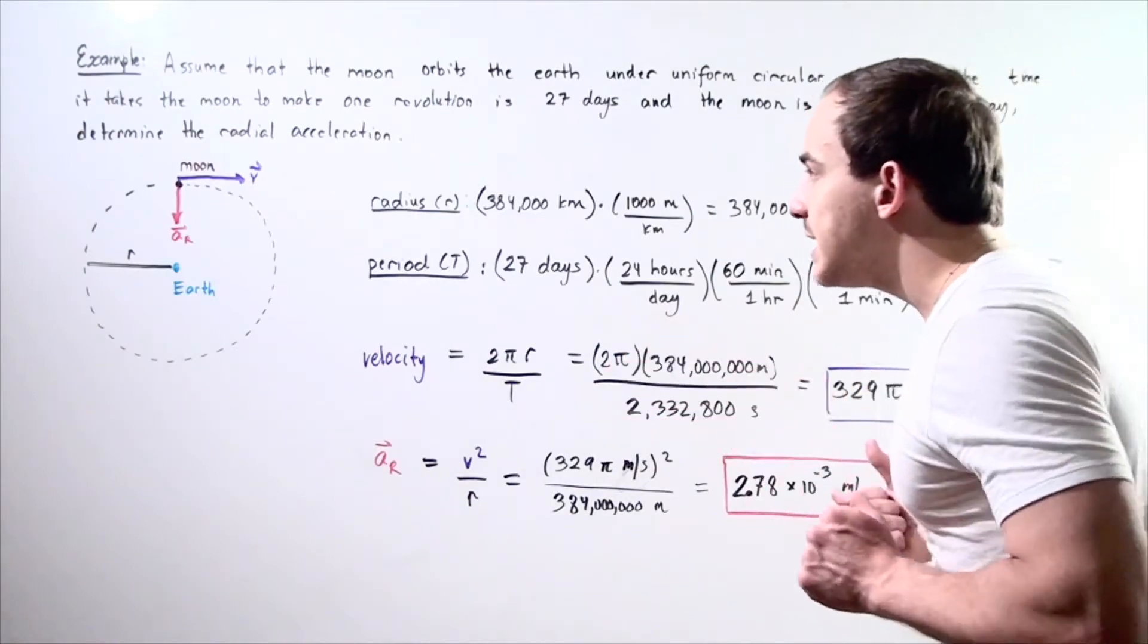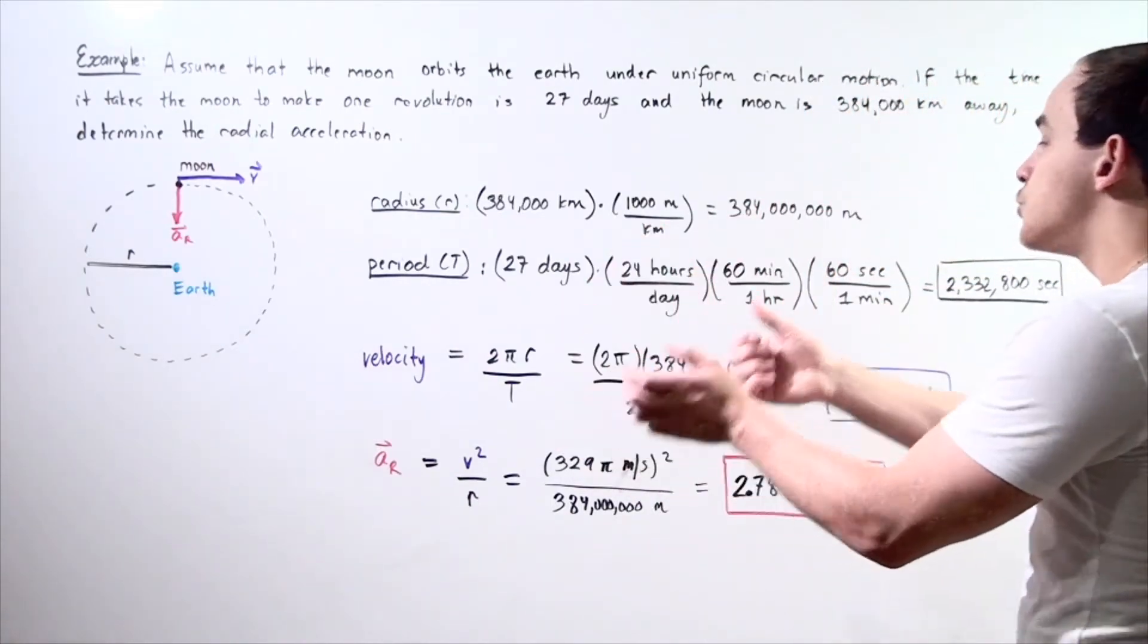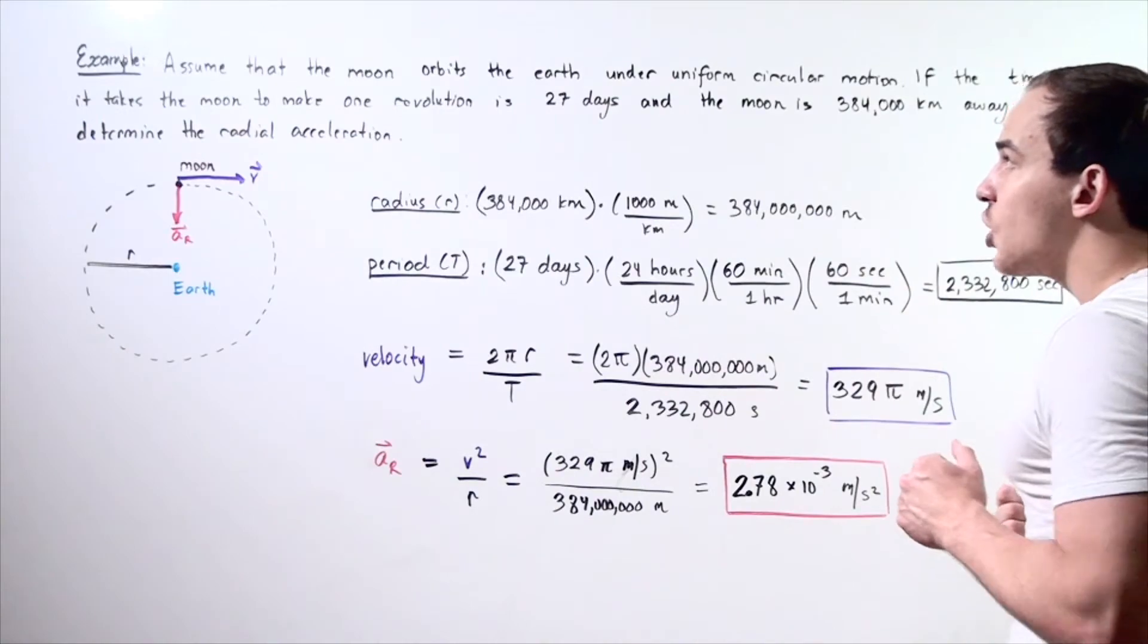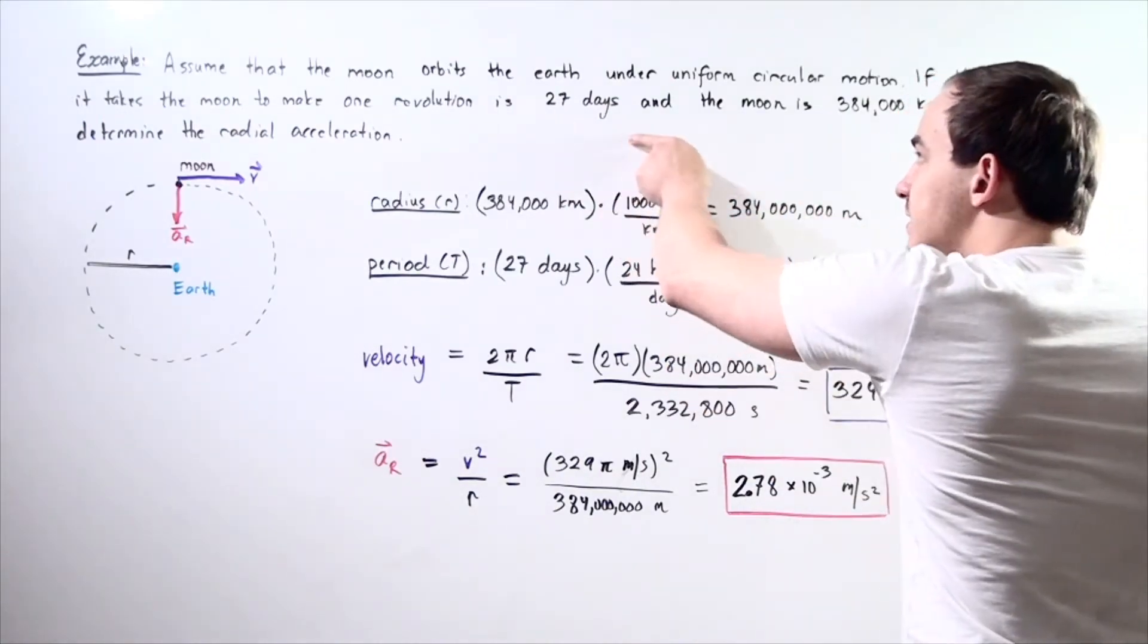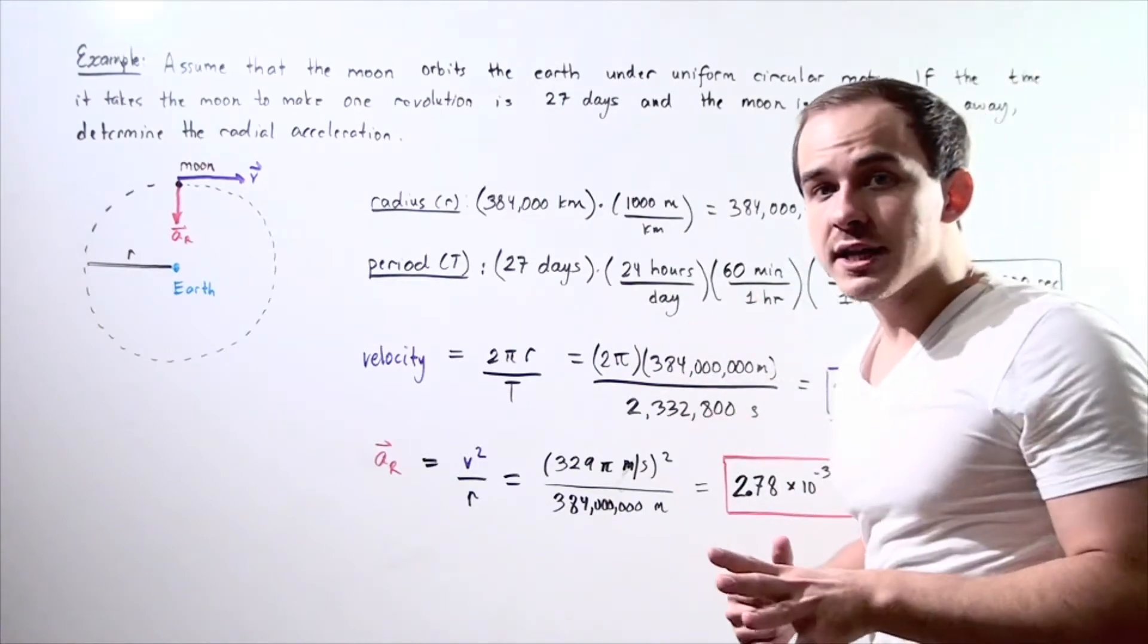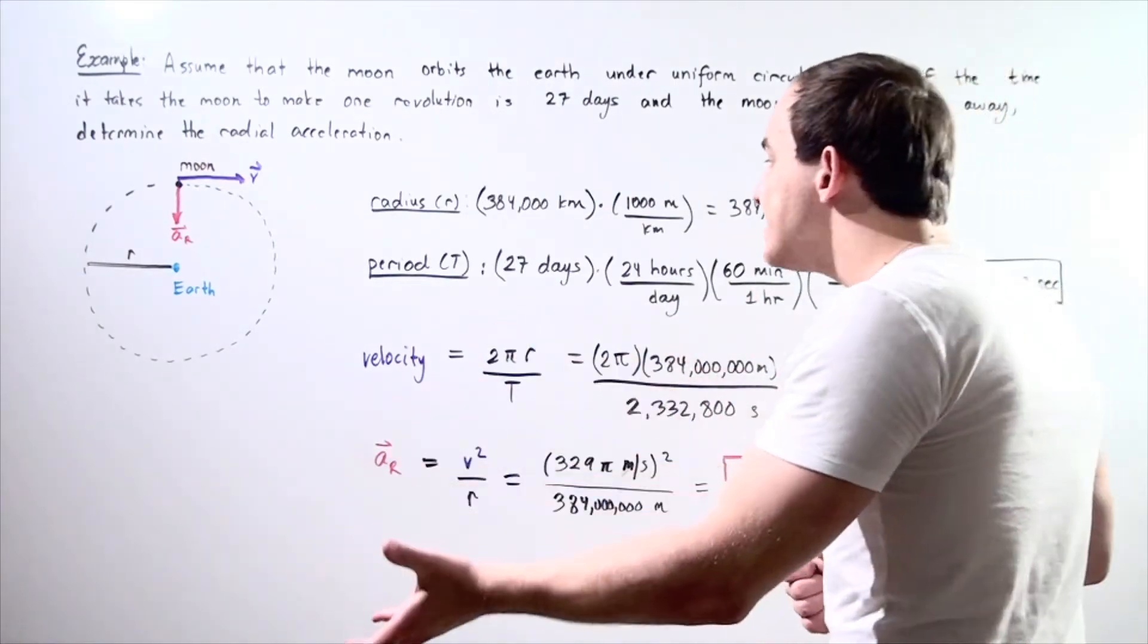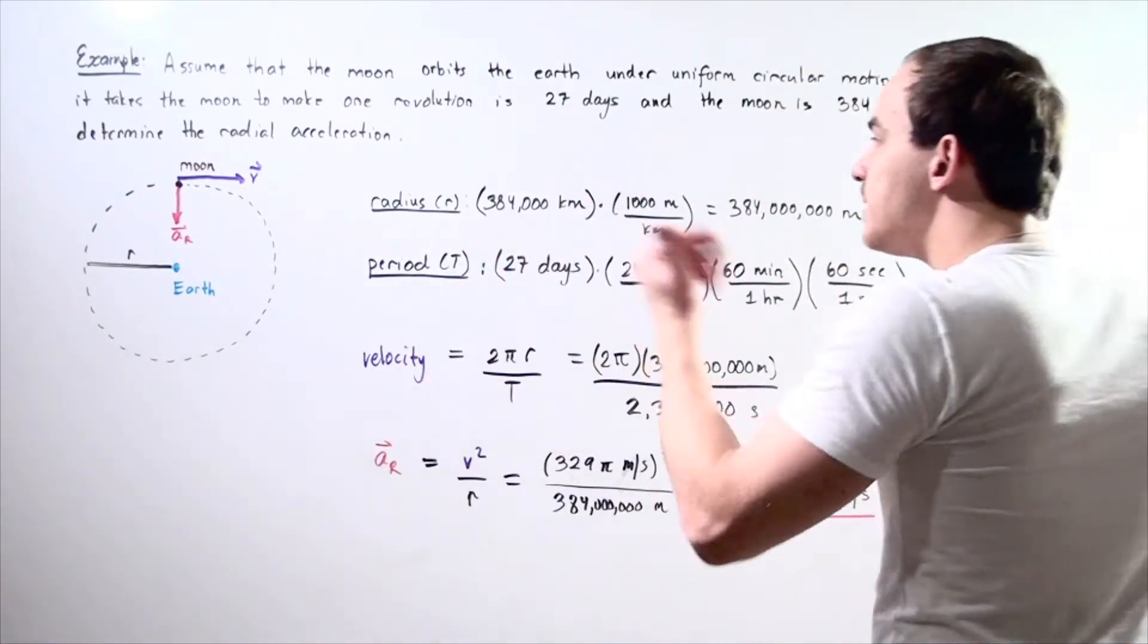Let's begin by converting our kilometers to meters. Then, we're going to take this 27 day. Note that 27 days is our period. And we want to convert days to seconds. So, let's begin our conversions.